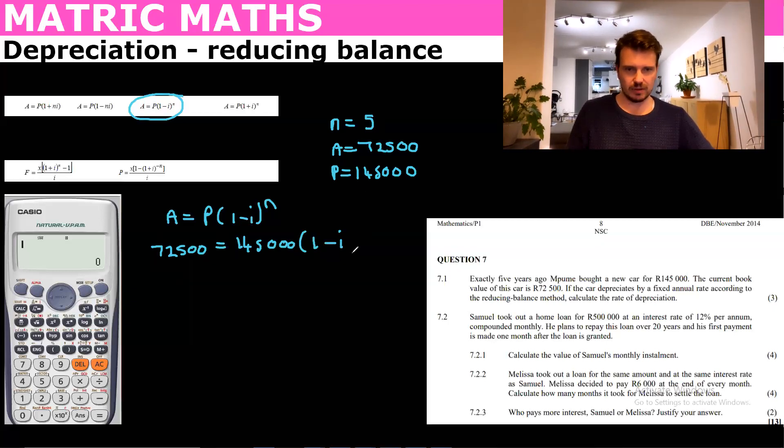Now we can divide these two by each other, so we'll just put 72,500 over 145,000. We'll cancel that. Then what we can do is take the fifth root, so we're going to do that on both sides. And that's going to give you (1 minus i).